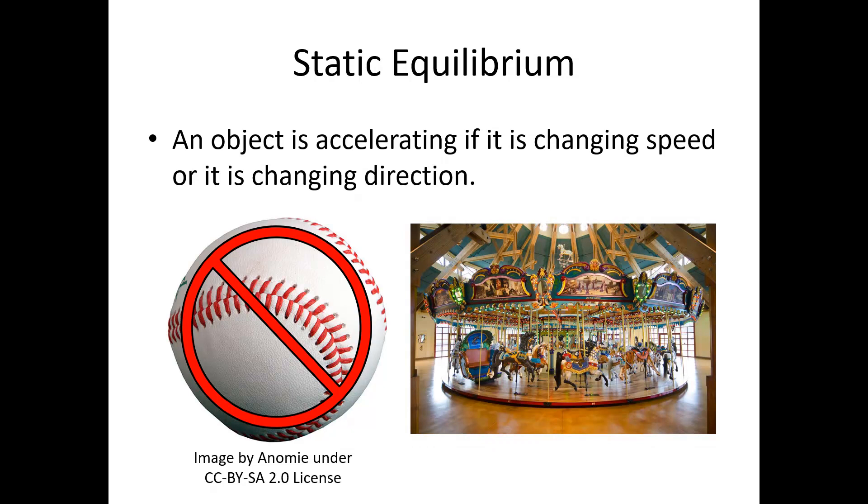Another example of something that is not in equilibrium would be a merry-go-round. Our truck was maintaining a constant speed and a constant direction. This merry-go-round is maintaining a constant speed but not a constant direction. If something is changing direction, it is changing velocity. If it's changing velocity, it has an acceleration and if it has an acceleration, it is not in static equilibrium.